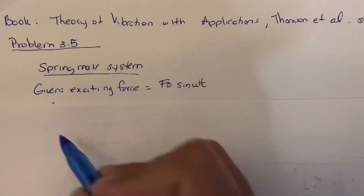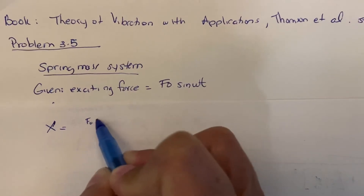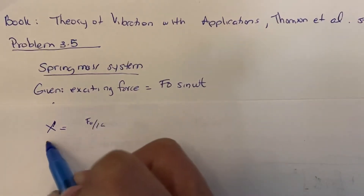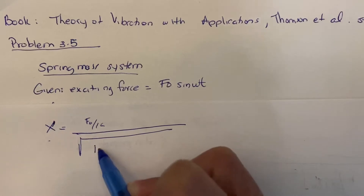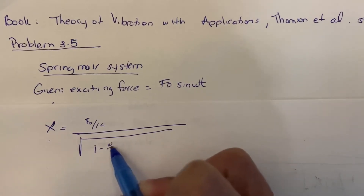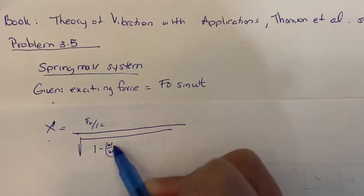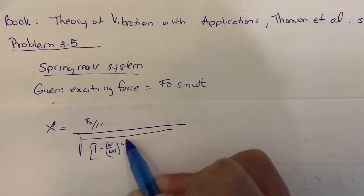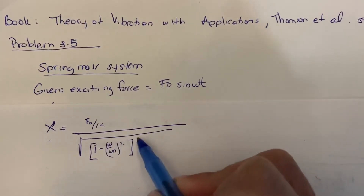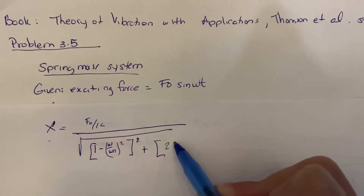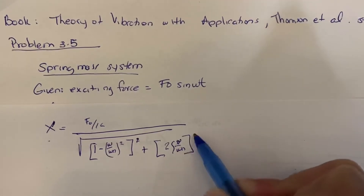That equation is: X equals F0 over k, divided by the square root of (1 minus W over Wn) squared, plus (2 times damping ratio times W over Wn) squared.